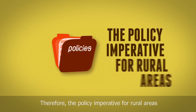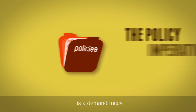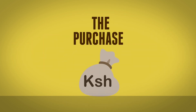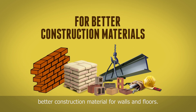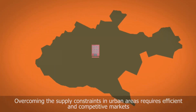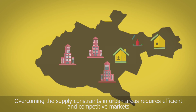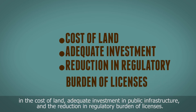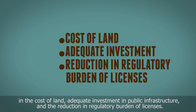The policy imperative for rural areas is a demand focus in order to enable the purchase of better construction materials for walls and floors. Overcoming the supply constraints in urban areas requires efficient and competitive markets in the cost of land, adequate investment in public infrastructure, and the reduction in regulatory burden of licenses.